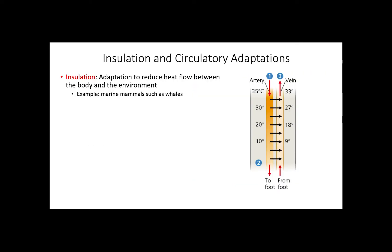Let's look at the concepts of insulation and circulatory adaptations. Insulation corresponds to an animal adaptation to reduce heat flow between the body and the environment. A good example are whales — these marine mammals often swim in cold waters but need to maintain a warm body core. They have blubber, an evolutionary adaptation corresponding to a thick layer of insulating fat under the skin, which helps maintain a warm temperature without the need to obtain too much energy from food.